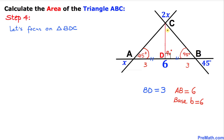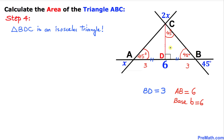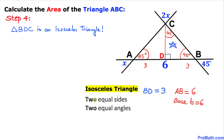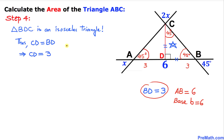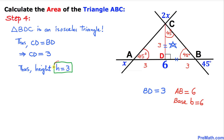Since the angles in triangle BDC must sum to 180 degrees, and we have 90 degrees and 45 degrees, angle BCD turns out to be 45 degrees as well. So triangle BDC is an isosceles triangle — a triangle with two equal angles and two equal sides. Since angles at B and C are both 45 degrees, side BD equals side CD. We know BD is 3 units, so CD is 3 units as well. Therefore, the height CD turns out to be 3 units.